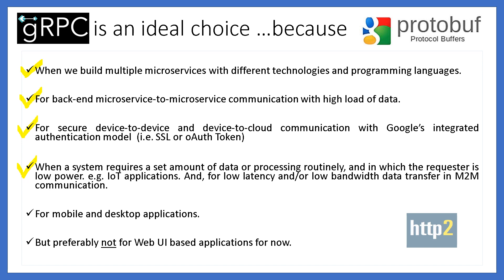The next ideal scenario could be when designing an architecture for mobile and desktop applications, because you can precisely define a service and auto-generate reliable client libraries for iOS and Android using the gRPC framework and protobuf. Clients can take advantage of advanced streaming and connection features which help save bandwidth, CPU usage, and battery life.